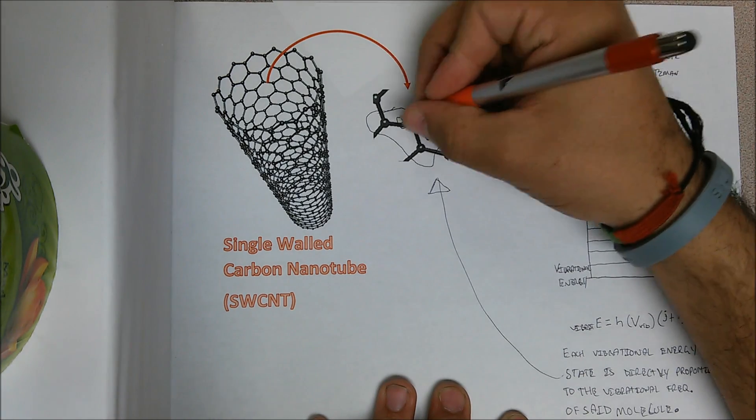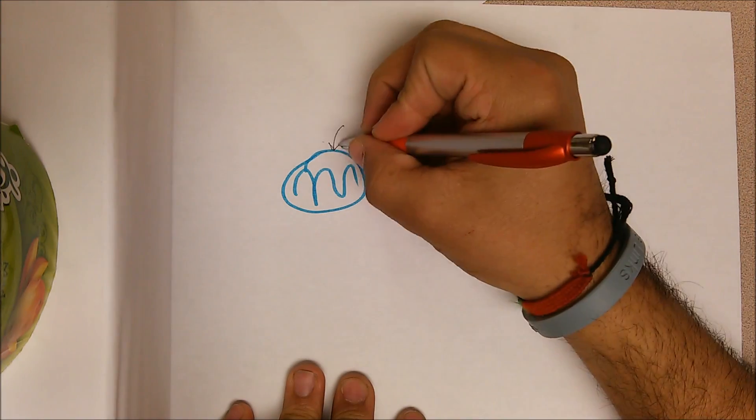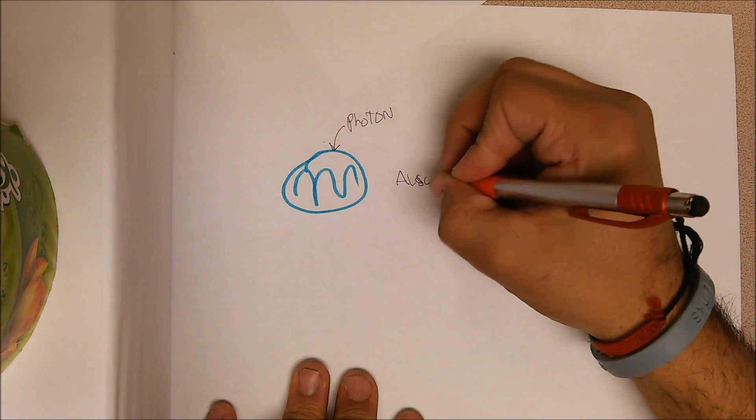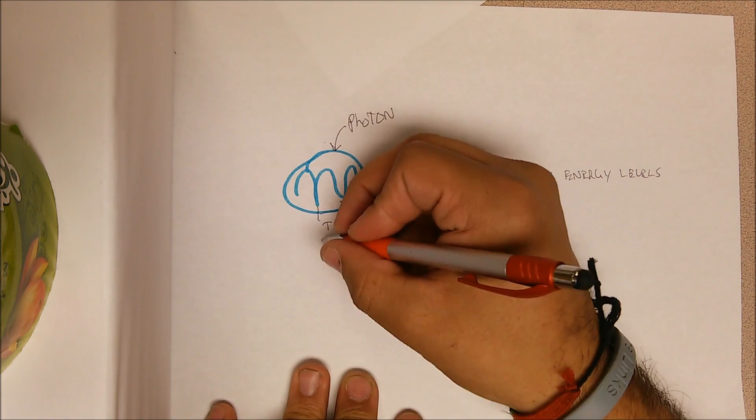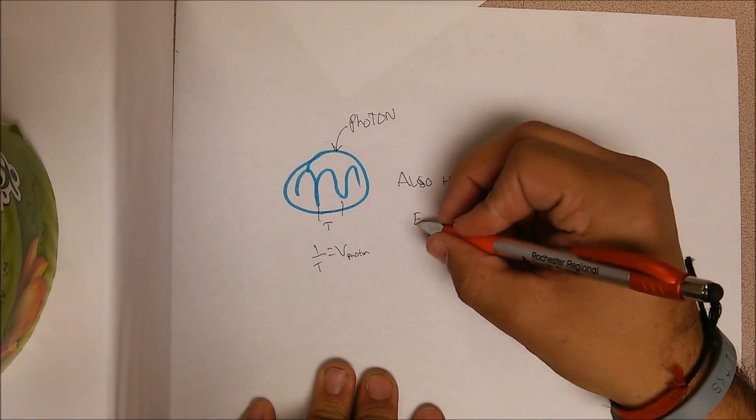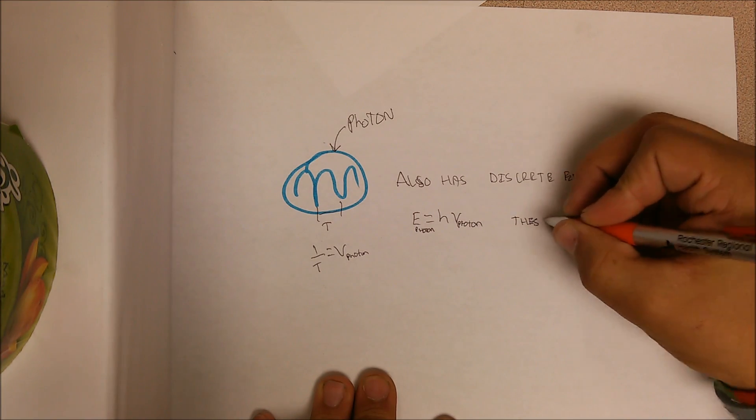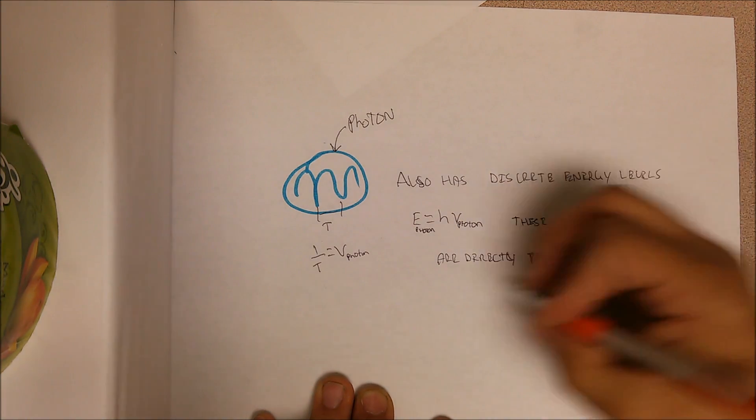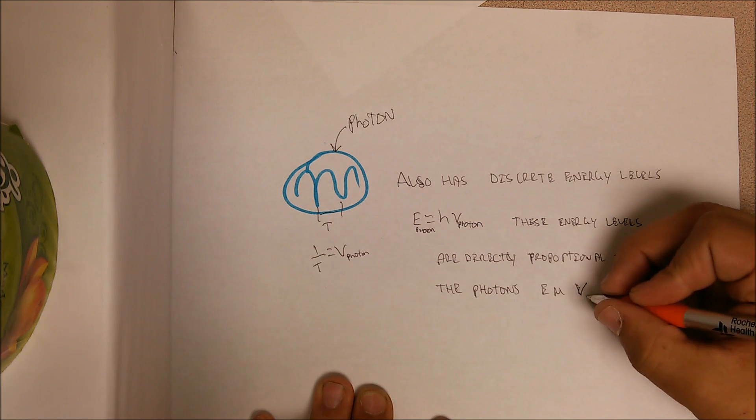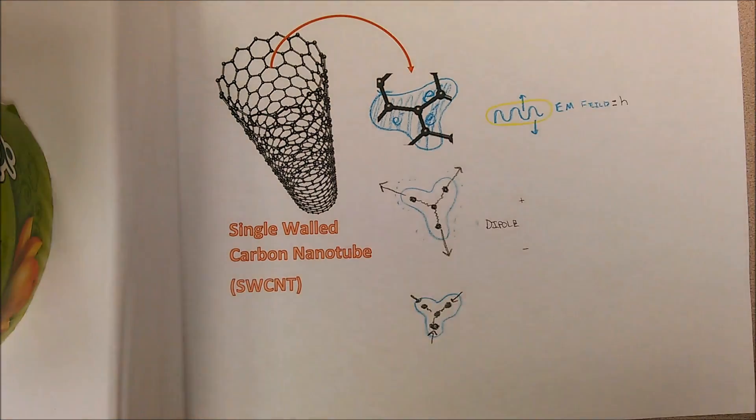Also referred to as some polarizability ellipsoid. Photons also have some discrete energy levels denoted by Planck's constant times the frequency of that photon. So the energy of that photon is directly proportional to the frequency of the electromagnetic field generated by that photon, which is denoted by V0, or the incident photon's frequency.